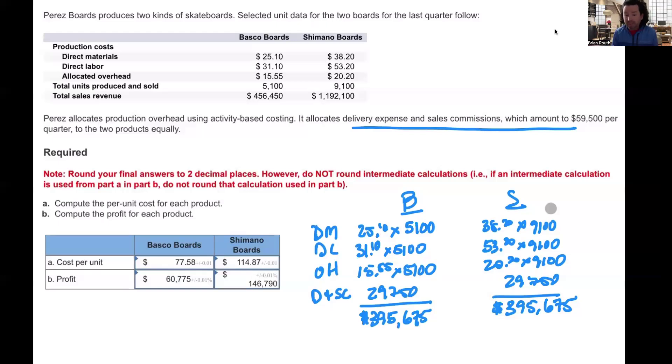So when we add up all these expenses, we get total production costs for our Basco of $395,675. And for the Shimano, we get $395,675. That is not correct. So I'm going to edit that piece of the video. So when we add up all the production costs for both our Basco and Shimano, we get $395,675 for the Basco and $1,045,310 for the Shimano.